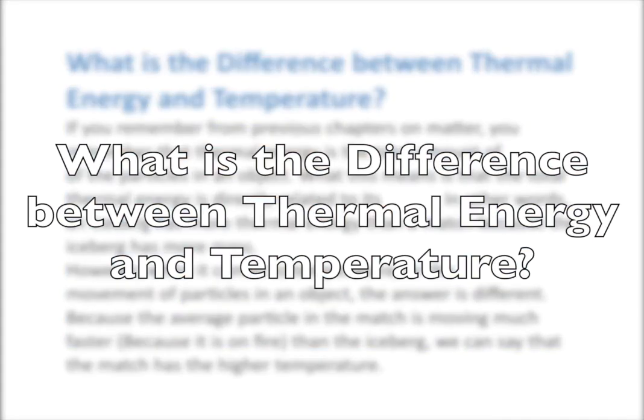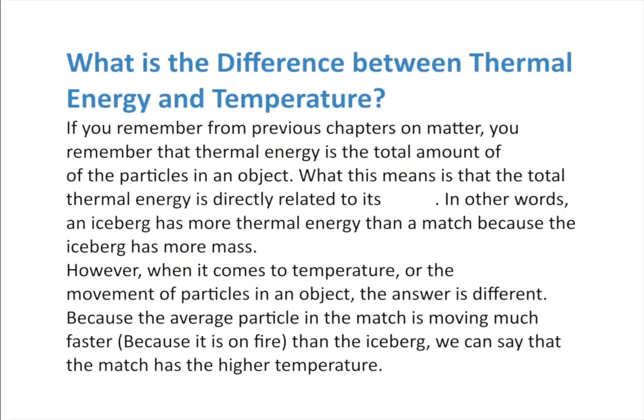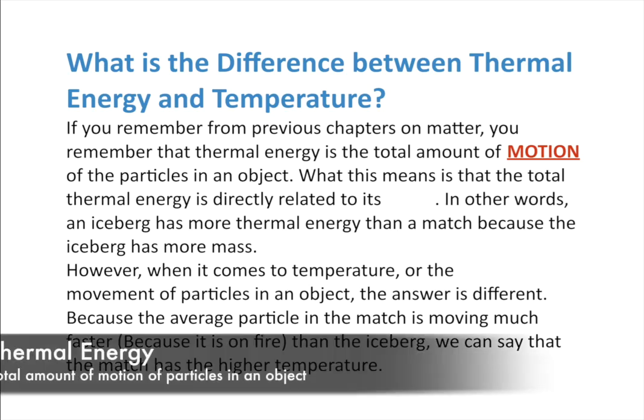From previous chapters on matter, we talked about the states of matter — solids, liquids, and gases — and how the state of matter an object is in depends on the amount of movement of its particles, which has to do with its temperature and heat. Thermal energy is the total amount of motion of the particles in an object. Solids have the least amount of motion; gases have the most.